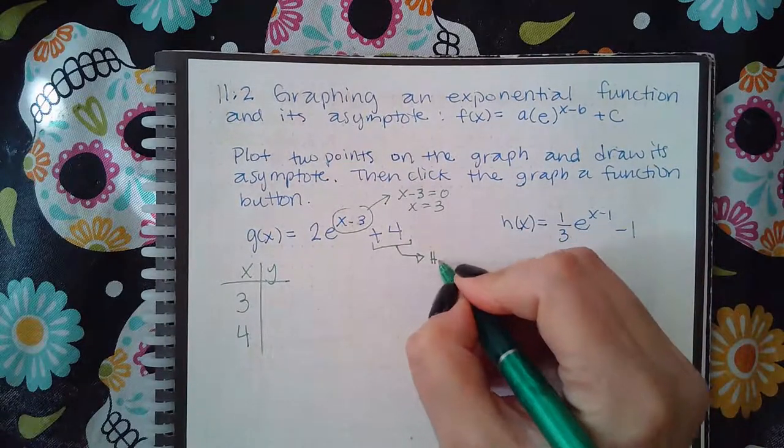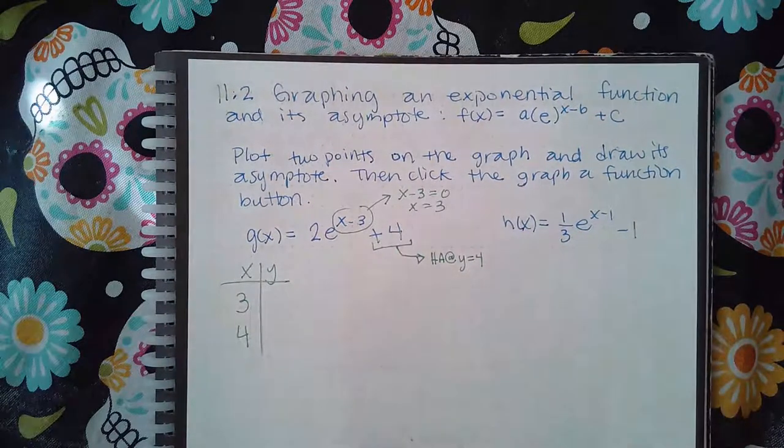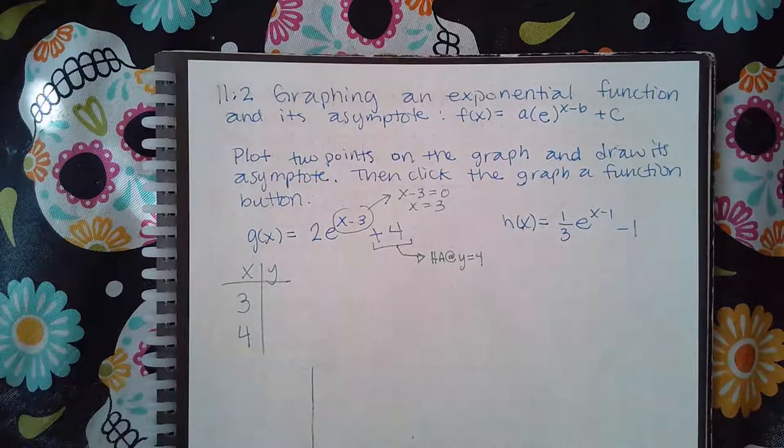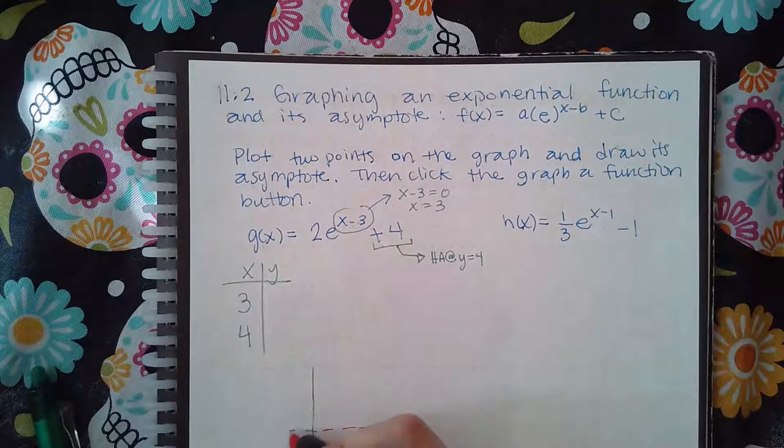This number out here is going to tell you where the horizontal asymptote is. Since that's a positive four, that means my horizontal asymptote is at y equals four. So when I go to draw this, I already know that at one, two, three, four I'm going to have a horizontal asymptote.